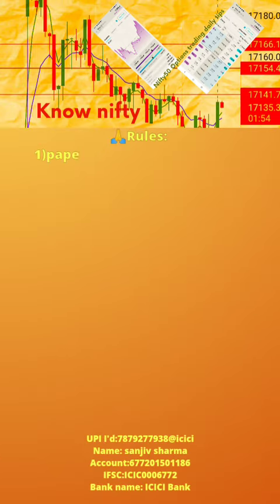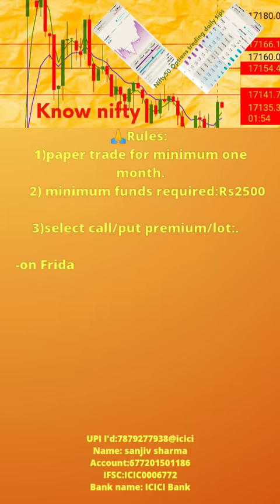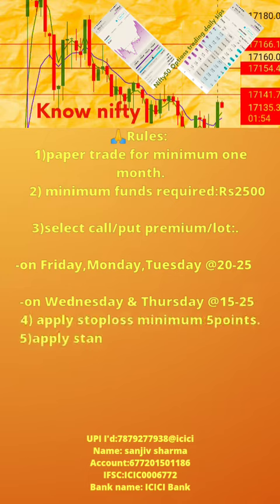Please follow the 7 rules below. 1. Paper trade for minimum 1 month. 2. Minimum funds required: 2,500. 3. Select call or put premium per lot — on Friday, Monday, Tuesday at the rate 20–25; on Wednesday and Thursday at the rate 15–25. 4. Apply stop loss of minimum 5 points.